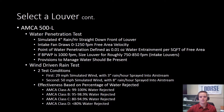Before we dive into how to select a louver, I want to cover AMCA 500L briefly. There are two tests in AMCA 500L that are important to what type of louver you want to select. The water penetration test simulates 4 inches of rain per hour being poured down the front of the louver in sheets, while an intake fan pulls air through the louver between 0 and 1250 feet per minute free area velocity. The point of water penetration is defined as 0.01 ounces of water being entrained in the airstream and making it through the louver per square foot of free area. A good rule of thumb for sizing louvers for this test: if the beginning point of water penetration, or BPWP, is 1000 feet per minute, then you will want to size the louver for roughly 750 to 850 feet per minute free area velocity.